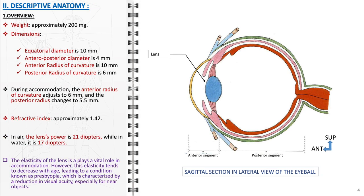The elasticity of the lens plays a vital role in accommodation. However, this elasticity tends to decrease with age, leading to a condition known as presbyopia, which is characterized by a reduction in visual acuity, especially for near objects.